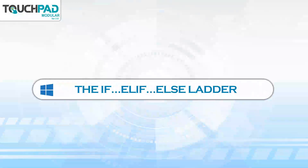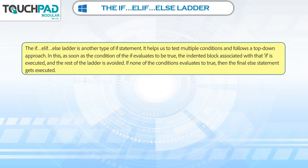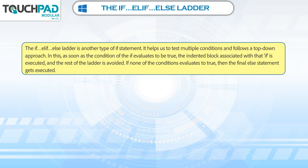The if-elif-else ladder is another type of if statement. It helps us to test multiple conditions and follow a top-down approach. As soon as the condition of the if evaluates to be true, the indented block associated with that if is executed, and the rest of the ladder is avoided. If none of the conditions evaluates to true, then the final else statement gets executed.